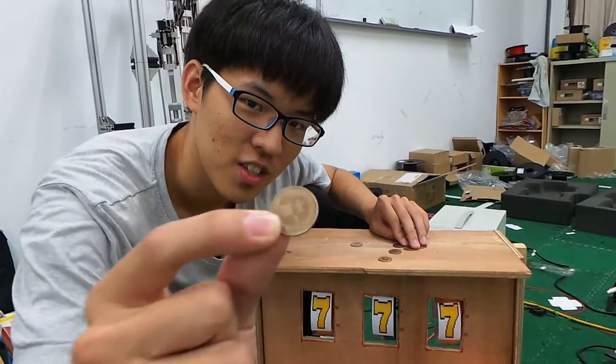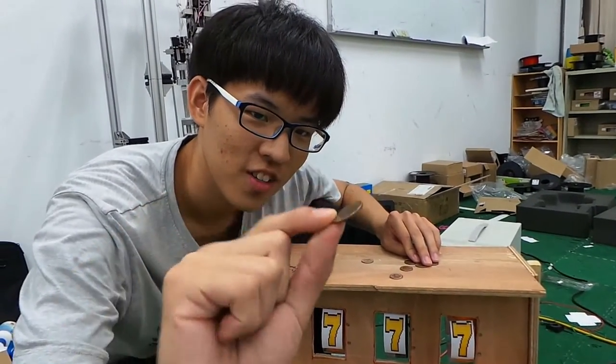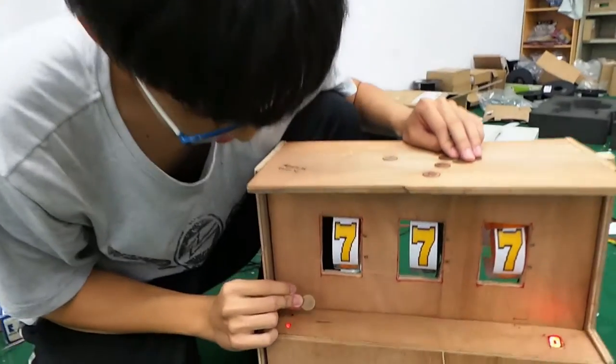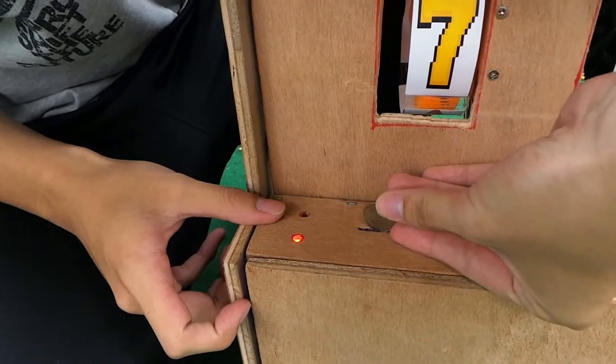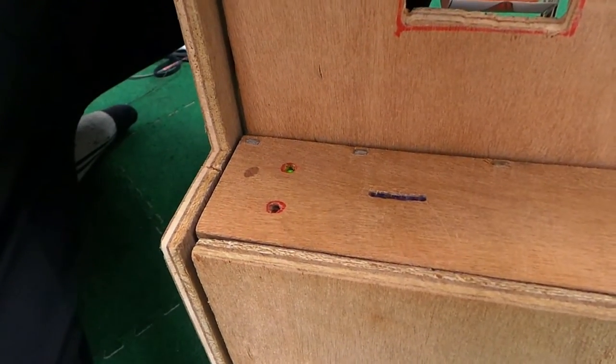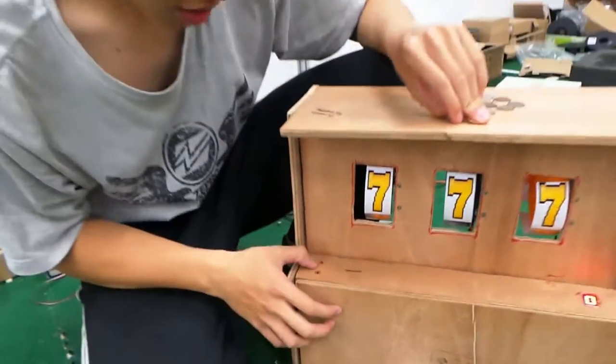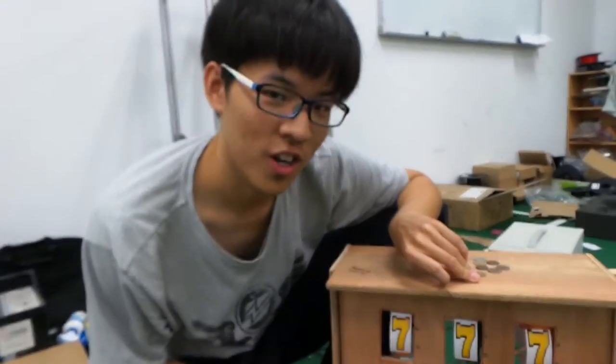Now you need a coin, which is 1 NT in this case. Throw it into the coin box and you can see the LED change. It will change color if it detects some coin. If it is green, that means you are good to go.